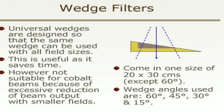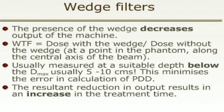Universal wedges are designed so that the same wedge can be used with all field sizes, saving time. However, not suitable for cobalt beams because of excessive reduction of beam output with smaller field size. Wedge angles used are 15 degrees, 30 degrees, 45 degrees, and 60 degrees. The presence of the wedge decreases output of the machine. Wedge transmission factor equals the ratio of dose with the wedge to dose without the wedge, usually measured at a stable depth below Dmax, typically at 5 to 10 cm, to minimize error in calculation of percentage depth dose. The resultant reduction in output results in an increase in treatment time.